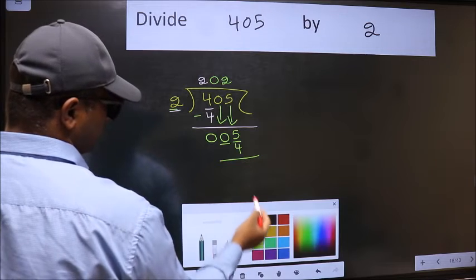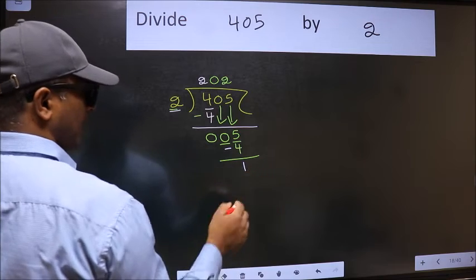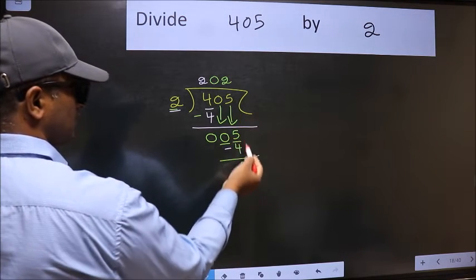Now we should subtract. We get 1. 1 is smaller than 2. And we don't have any more numbers to bring down.